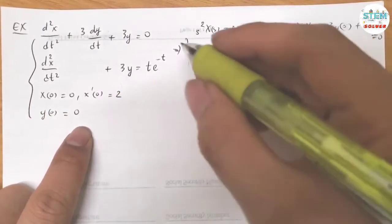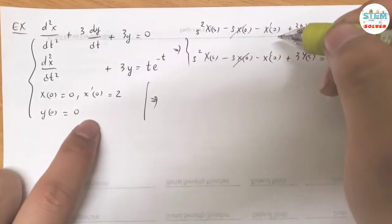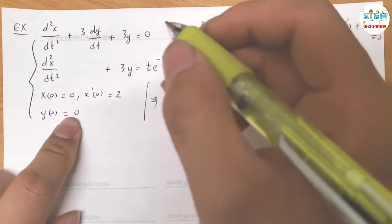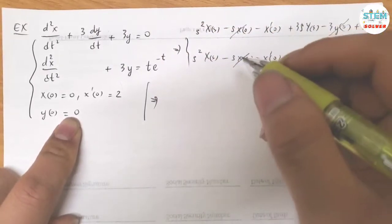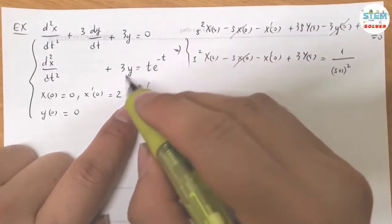Now plug in the conditions. Y of S of 0 equals 0. Y of 0 equals 0. It doesn't eliminate much which I do not expect.